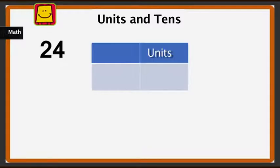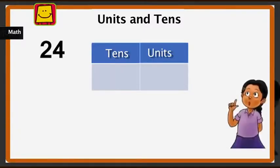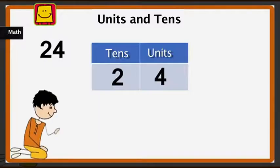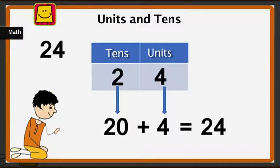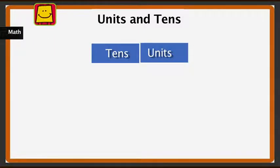First the units and then tens. There is 2 in the tens place and 4 in the units place. Let us see how this is equal to 24. 2 in the tens place means 20, and 4 in the units place means 4. When you add the two numbers, 20 and 4, you get 24.